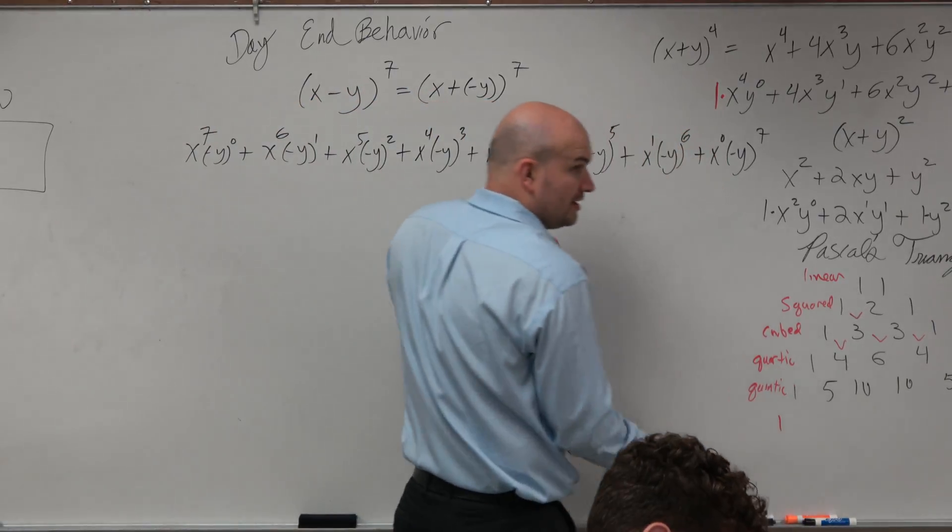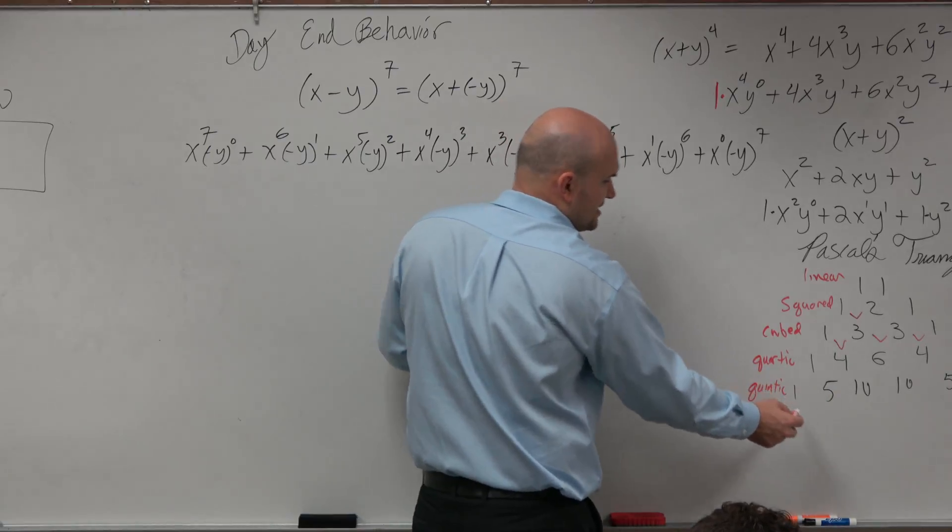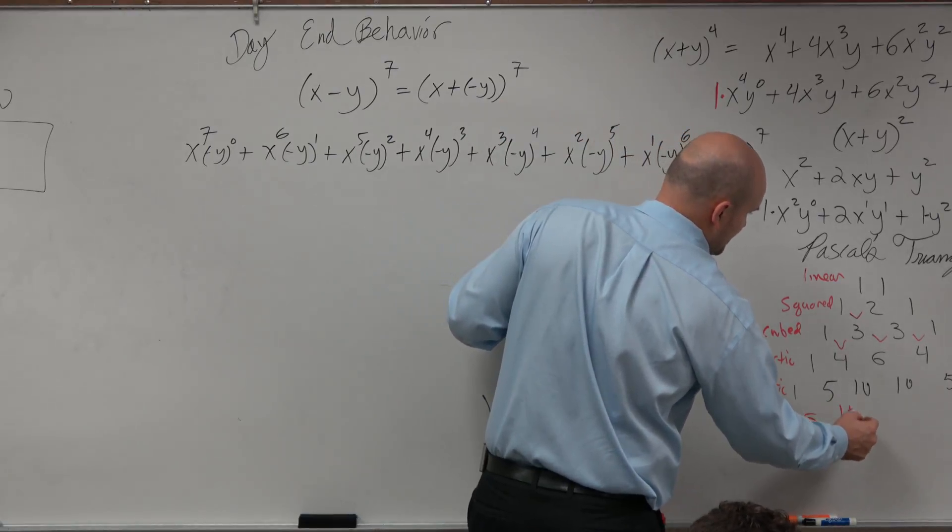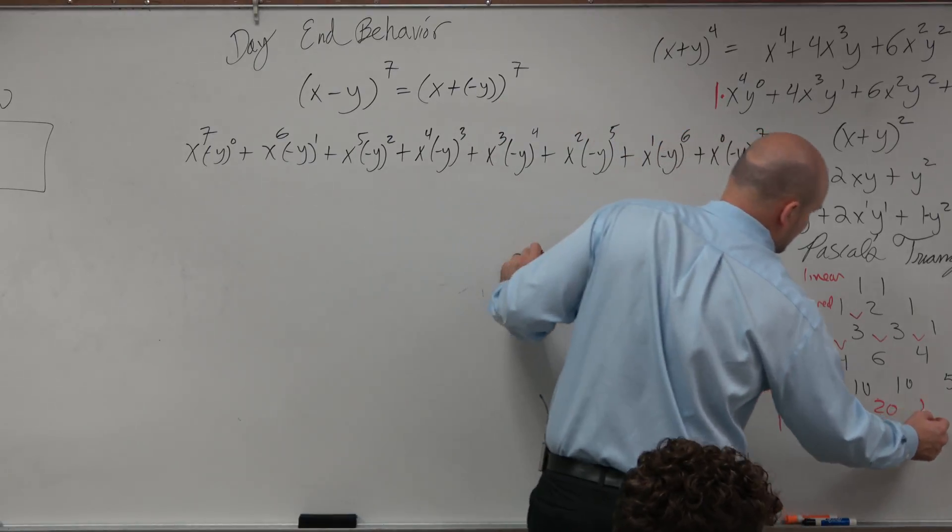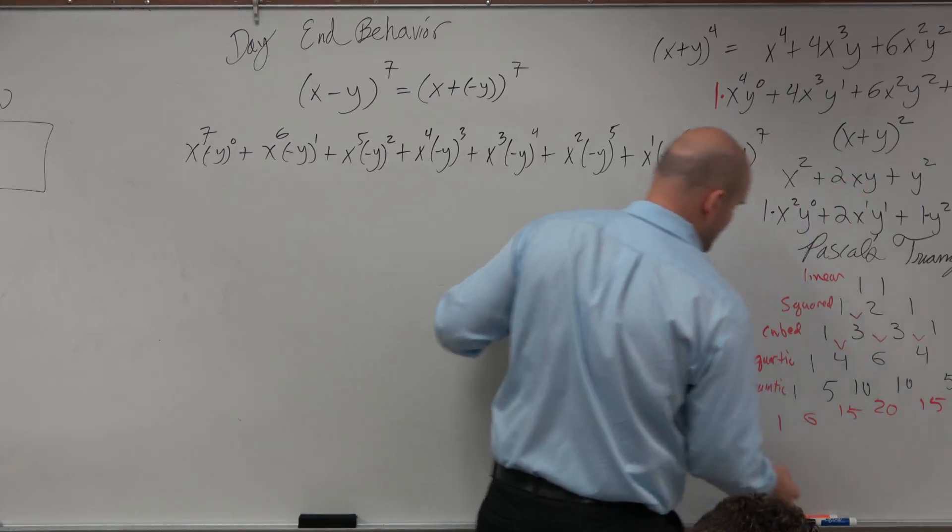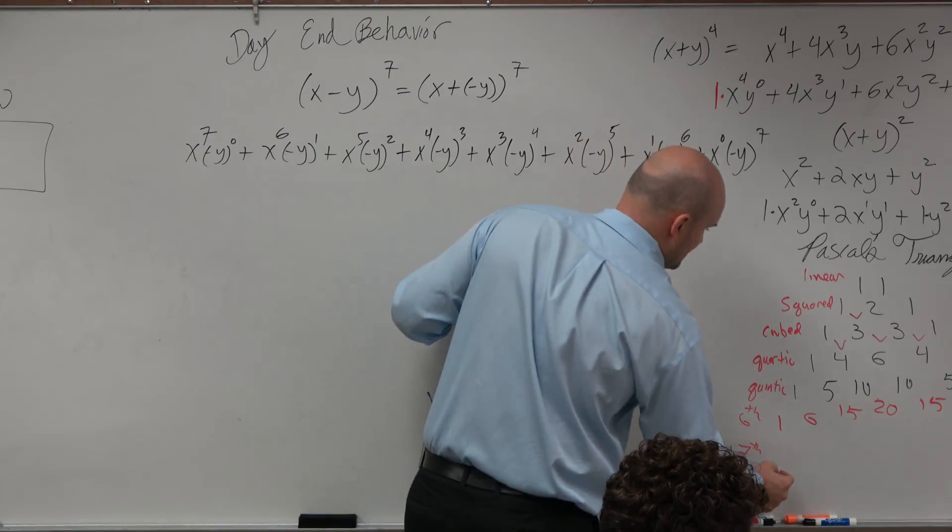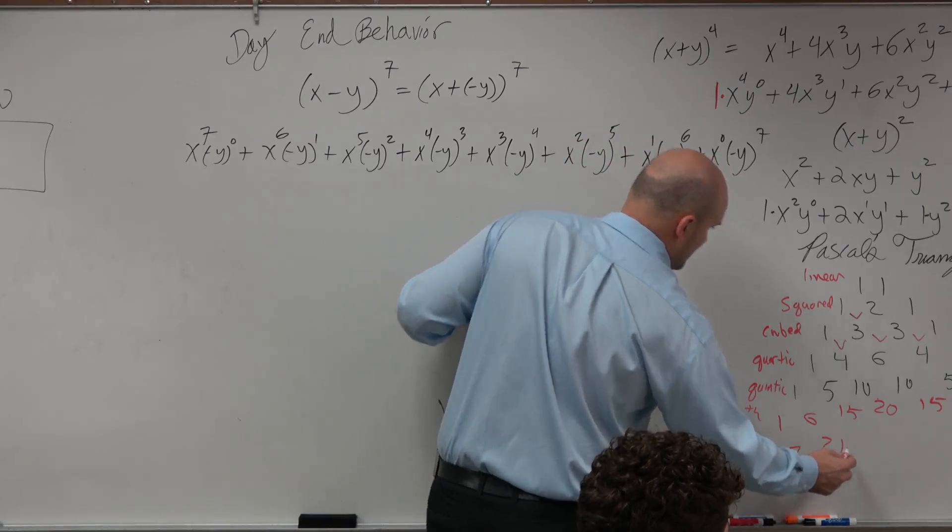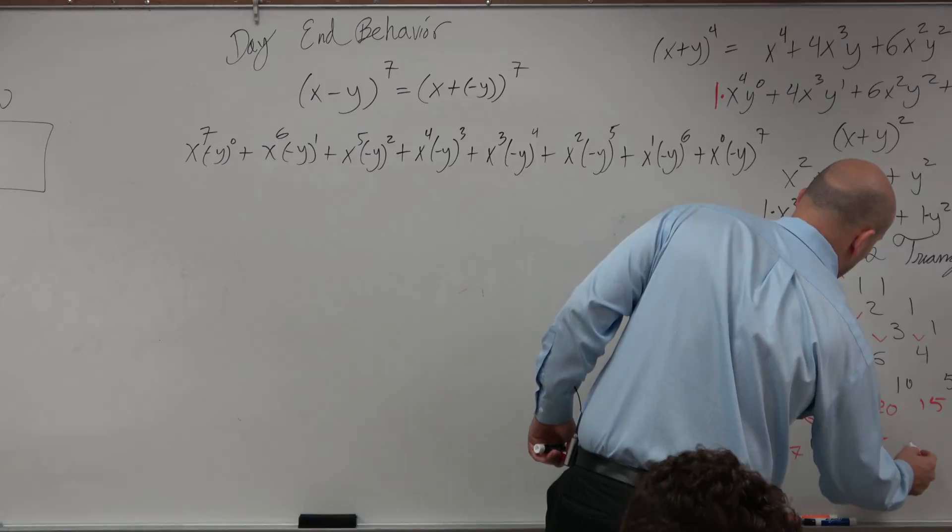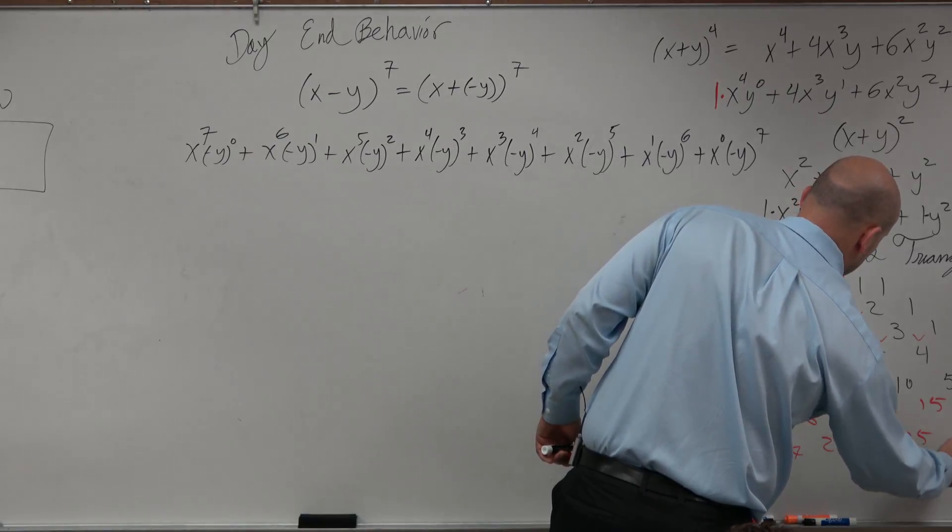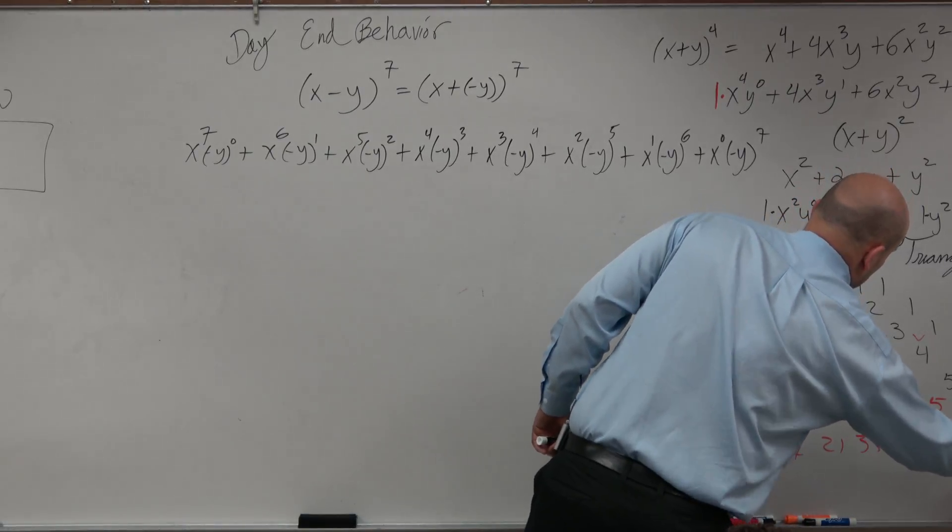Then I'm going to add another 1, and then combine my two terms to get to the next row. So this would be 6, 15, 20, 15, 6, and 1. So that's to the 6th power, and I need to the 7th. So that's going to be 1, 7, 21, 35, 35, 21, 7, and 1.